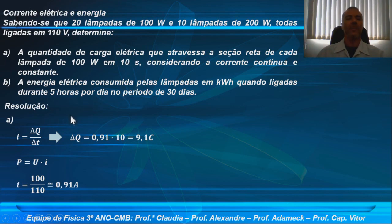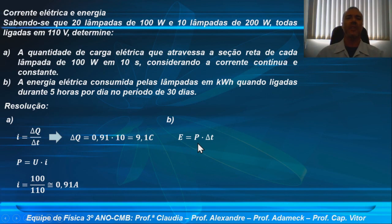Para o item B, ele quer a energia elétrica que esse sistema consumiu em 5 horas de funcionamento por dia ao longo de 30 dias. Sabemos que a energia vai ser igual à potência vezes o intervalo de tempo. Lembre-se que potência é a taxa com que a energia é transferida pela corrente elétrica para o circuito. Energia igual a potência vezes o tempo.